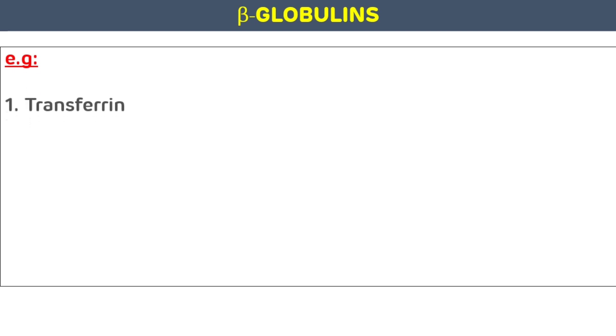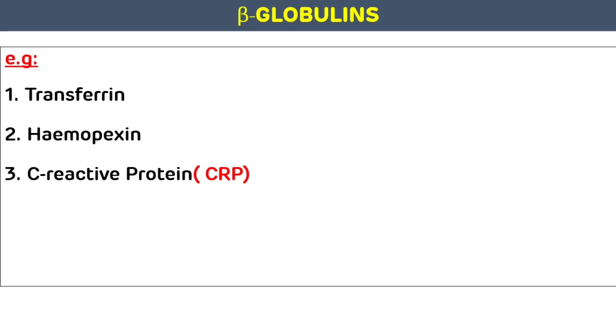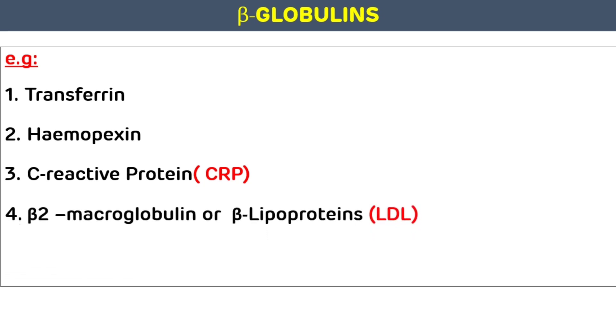Now we will discuss beta globulins. The examples of beta globulin are: transferrin, hemopexin, C-reactive protein (an acute phase protein), and beta-2-microglobulin (or beta-lipoprotein).